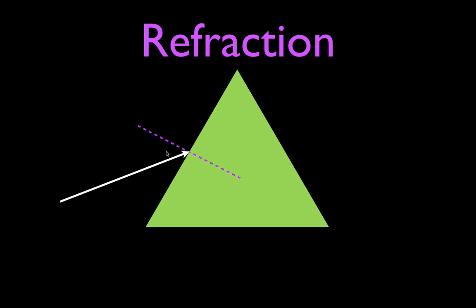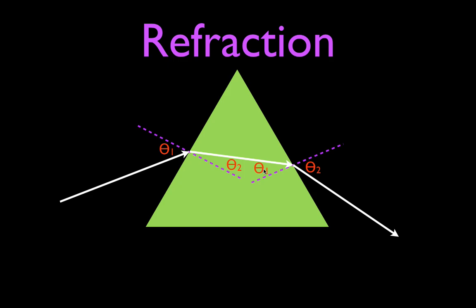The normal line is 90 degrees to the surface. Since this has a higher index of refraction, we bend the light ray towards the normal line — the angle of refraction is less than the angle of incidence. Now it strikes the other boundary and goes into a material with a lower index of refraction — draw the normal line first, then bend it away from the normal line. This is our angle of refraction and this is our angle of incidence; the angle of refraction is greater than the angle of incidence. So we have theta 1 as the incident angle and theta 2 as the refracted angle.